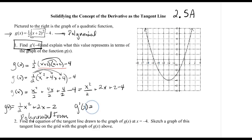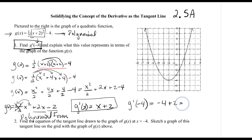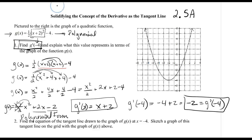Once it's in polynomial form, I can take the derivative. G prime of x: the first term gives 1x using the power rule (2 times one half), derivative of 2x is plus 2, derivative of negative 2 is 0. So g prime of x equals x plus 2. They ask me specifically to find the derivative at negative 4, so I evaluate: g prime of negative 4 equals negative 4 plus 2, which gives me negative 2.